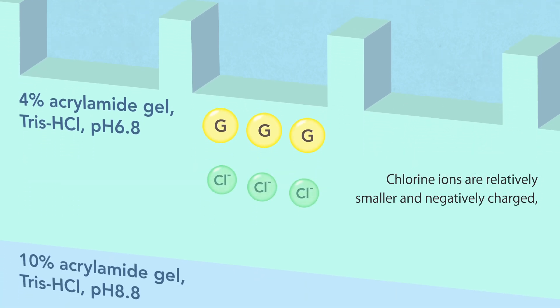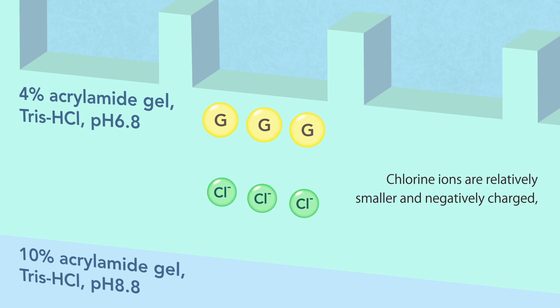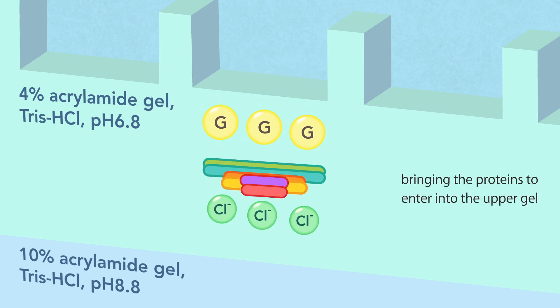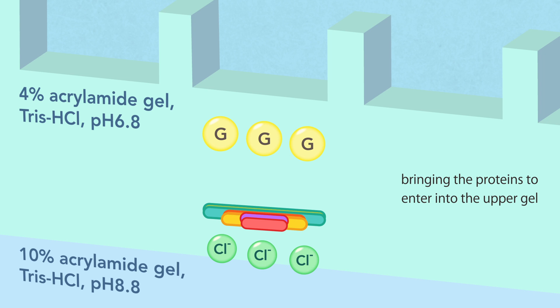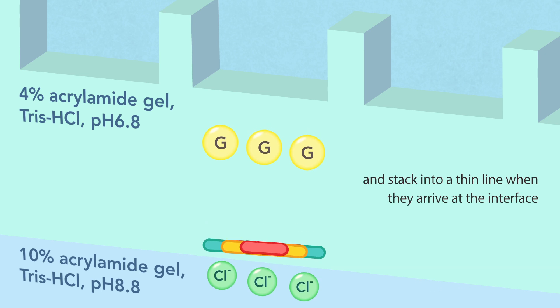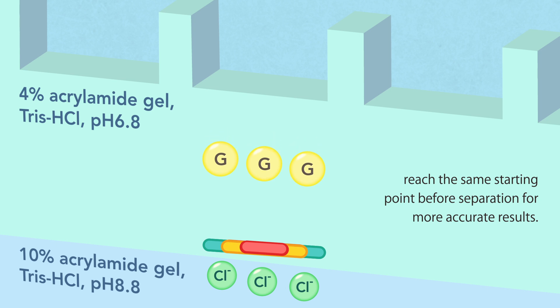Chlorine ions are relatively smaller and negatively charged, thus move faster in the gel. A steep voltage gradient between the two ion fronts is therefore generated, bringing the proteins to enter into the upper gel and stack into a thin line when they arrive at the interface between the upper and lower gels. The stacking effect is to ensure that proteins reach the same starting point before separation for more accurate results.